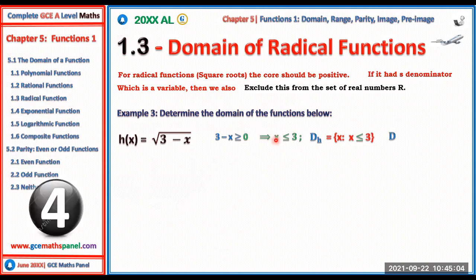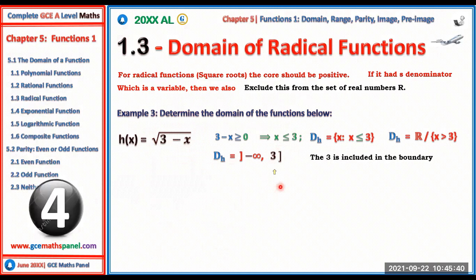The domain can be written as the set of all real numbers excluding values strictly greater than 3, or in interval notation as (−∞, 3]. Notice that the boundary 3 is included — when x = 3, we get √0 = 0, which is defined. So the bracket is closed at 3, not open. Be careful with these signs.